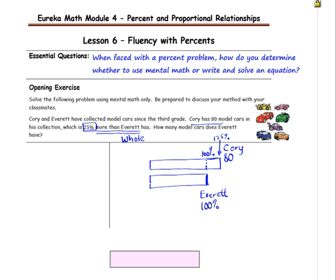What I can do next is I can divide Corey's bar into groups of 25%. Because a common factor between 100 and 125 is 25. So I'm going to divide Corey's bar and Everett's bar into groups of 25%. So this would be the 50% mark, this would be the 25% mark, and this would be the 75% mark. What I can do next is I can take the cars that Corey has, which is 80 cars, and I can split it between these five sections to find out how many cars would go in each section.